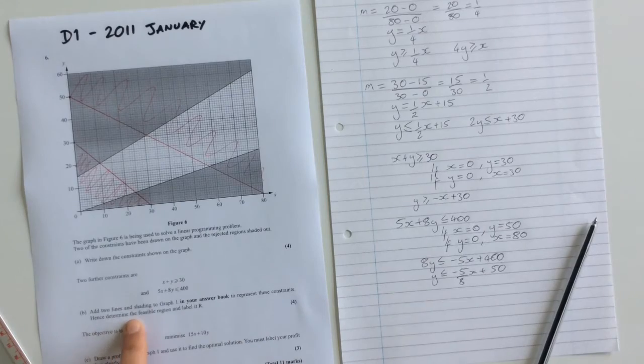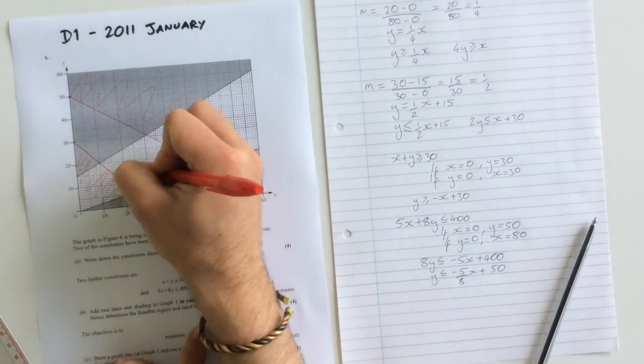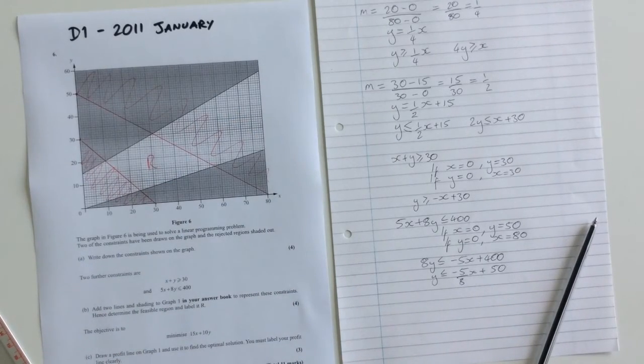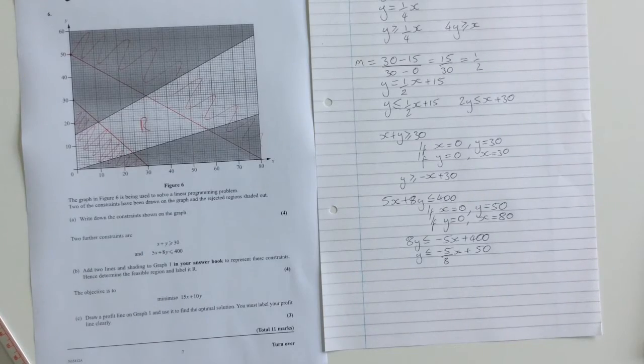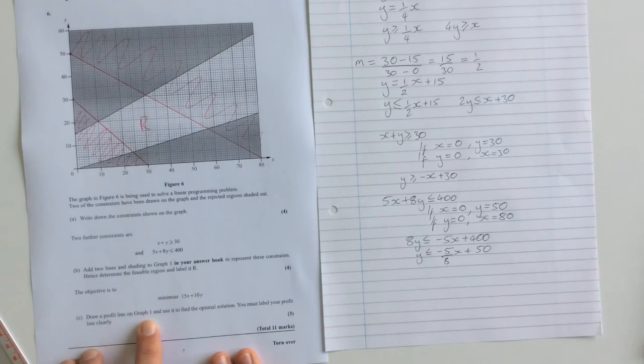Don't forget for the whole question: hence determine the feasible region and label it R. Well, the only part that is not shaded is this section here, so that is our feasible region R. And for the last part of the question, we're told that the objective is to minimize 15x plus 10y. We've got to draw the profit line on graph 1 and use it to find the optimal solution, labeling the profit line clearly.